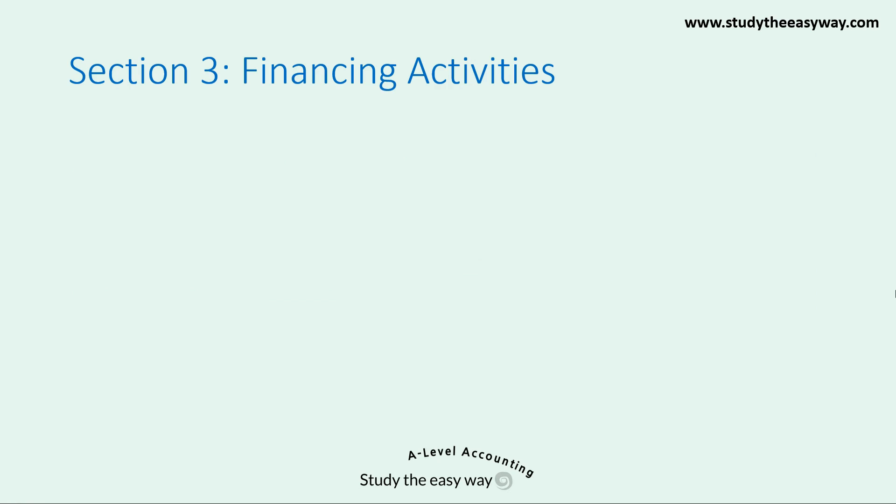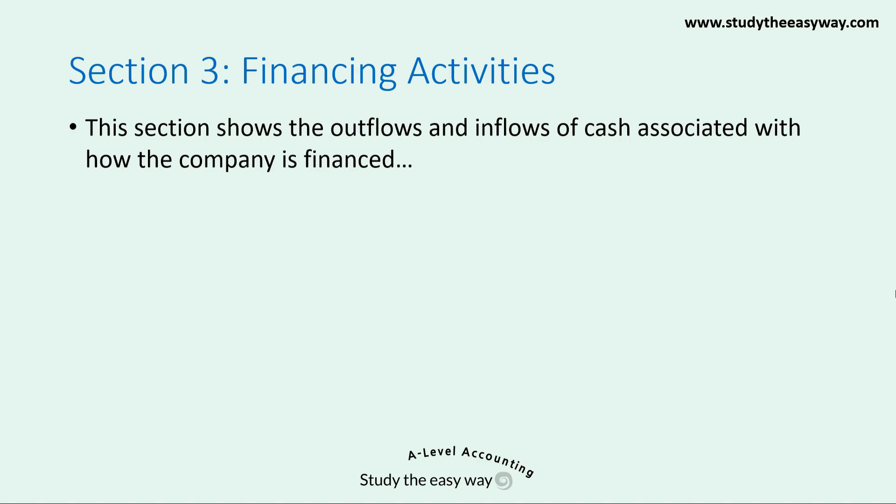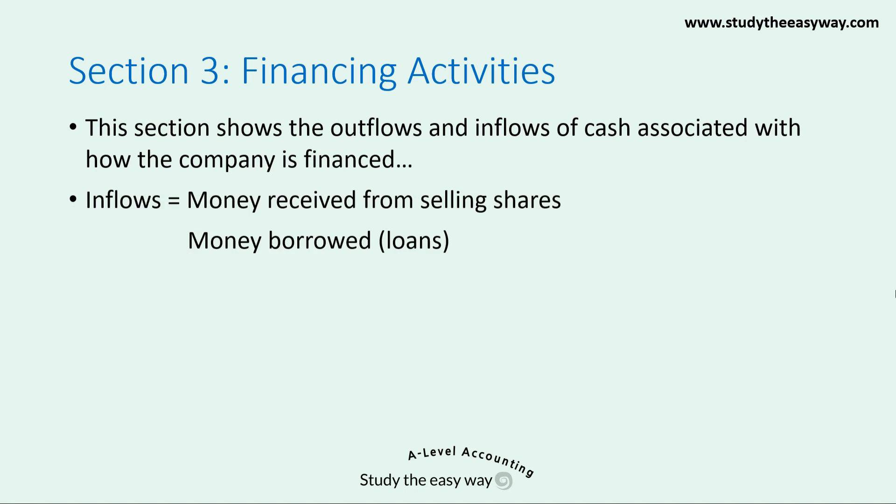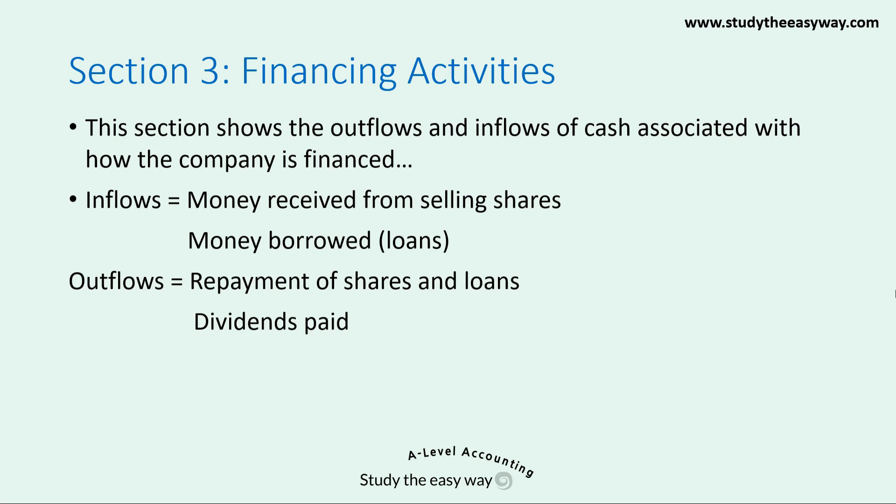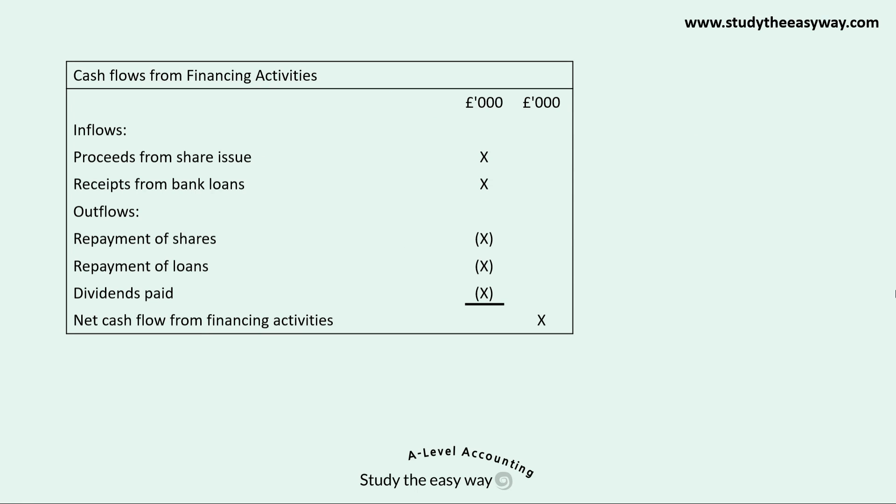Next we have Section 3, Financing Activities. This section shows the outflows and inflows of cash associated with how the company is financed. Inflows are money received from selling shares and money borrowed in the form of loans. Outflows are repayment of shares and loans and dividends paid. Inflows — proceeds from share issue and receipts from bank loans — are both added. Outflows, all shown with a bracket, are deducted: repayment of shares, repayment of loans, and dividends paid. A subtotal is calculated and labelled as net cash flow from financing activities.